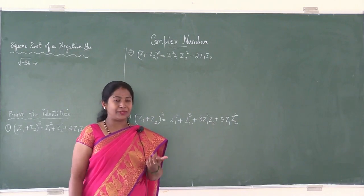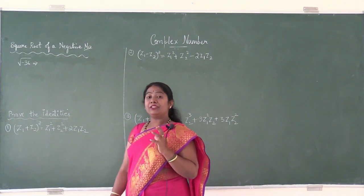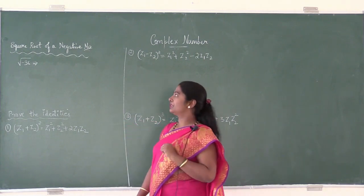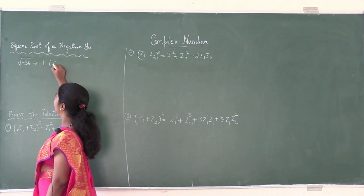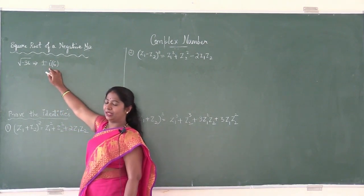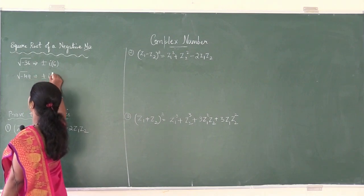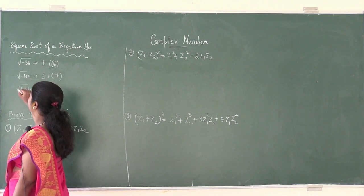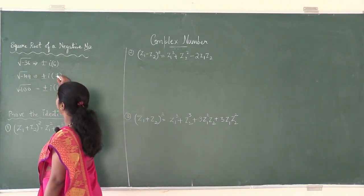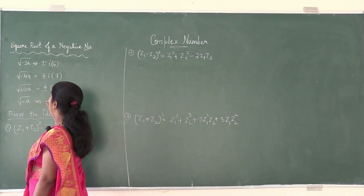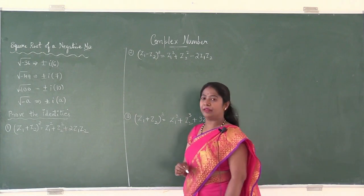We also discussed the algebra of complex numbers: addition, subtraction, multiplication, and division. Moving on to the next class — square root of a negative number. In general, √36 = 6, whereas for complex numbers, √(−36) = ±6i. Since i = √(−1), similarly √(−49) = ±7i, √(−100) = ±10i, and in general √(−a) = ±i√a. This is how we represent the square root of a negative number.